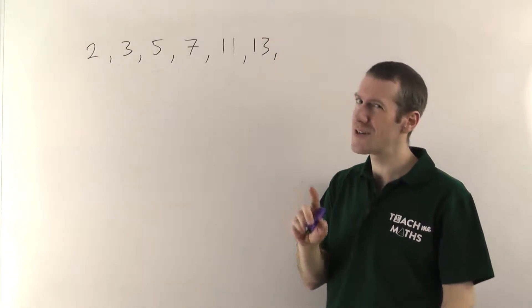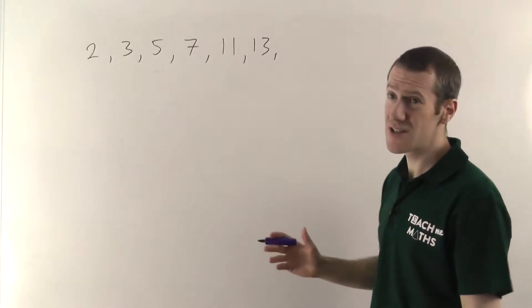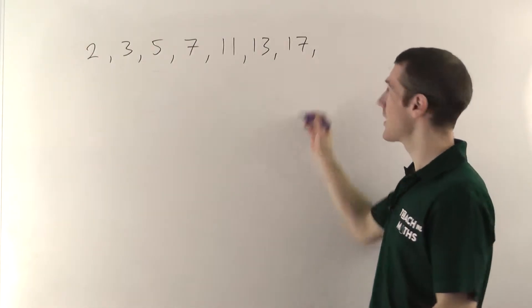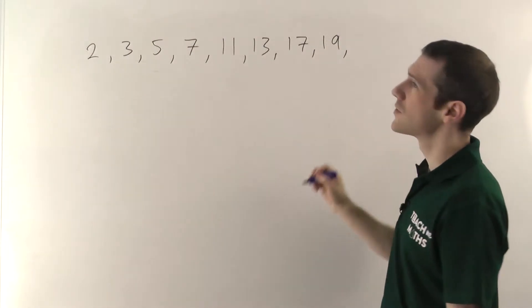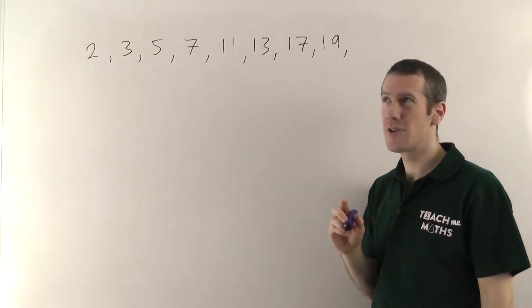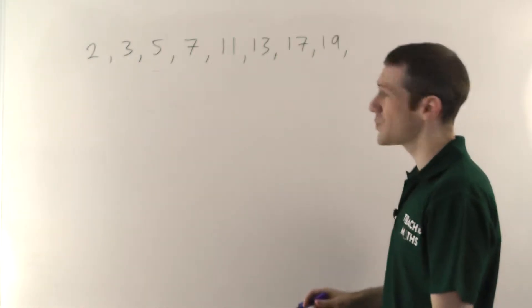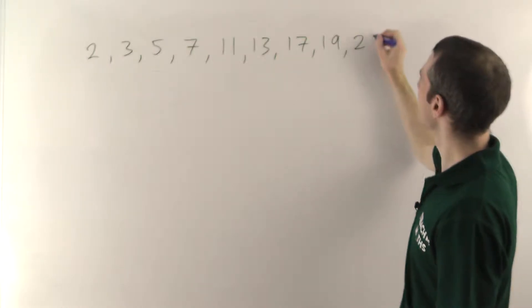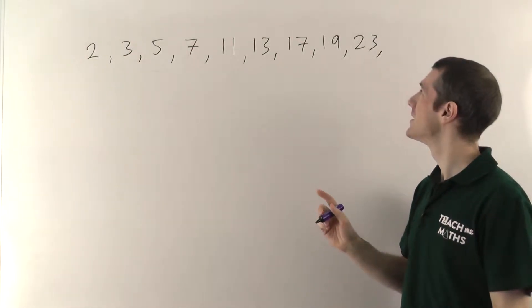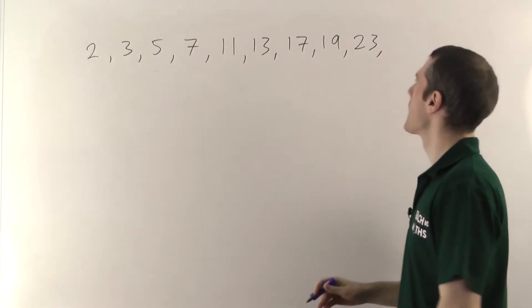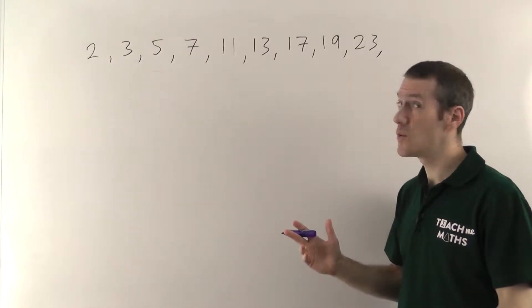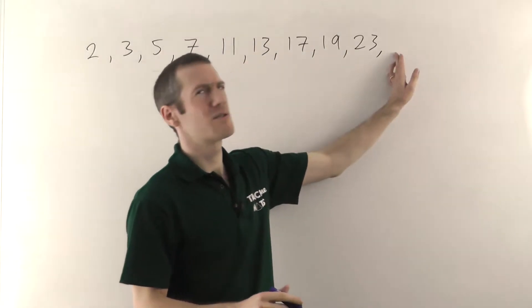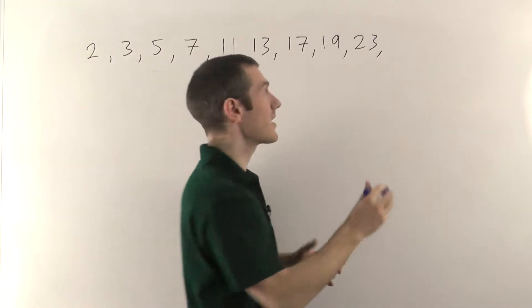15, well 3 times 5 is 15, so that's not prime. 17 is prime, nothing else goes into 17. 19, yeah, I don't think anything else goes into 19. 21, well 3 sevens are 21, so that's not prime. 23, I don't think anything else goes into 23, so that's a prime number. 25, well 25 is divisible by 5, so that's not prime. 27, oh hang on, 3 nines are 27, so 27 is not prime either. So 29, yes, I don't think anything else goes into 29.